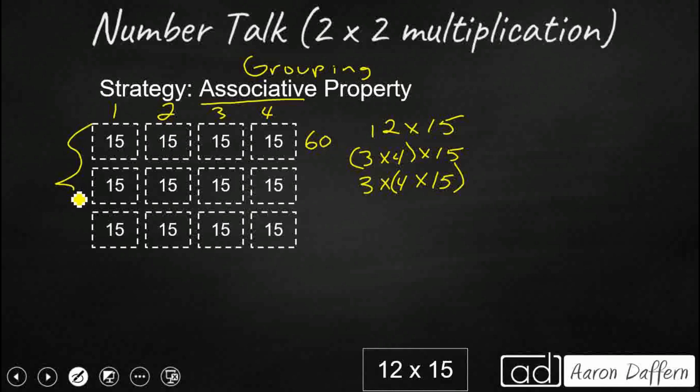And then I've got three of those groups of four groups of 16. So I'm skip counting by 60. So I've got 60, 120, 180. So you can take one of your factors and break it apart into two smaller factors and then change the groups.